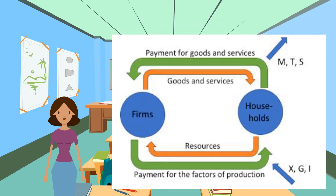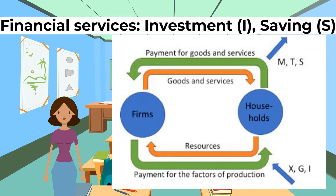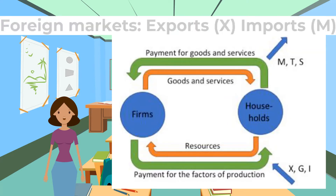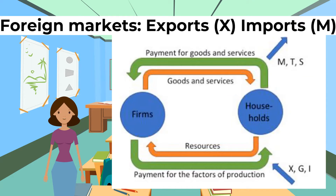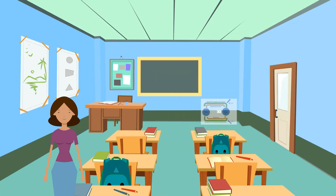Government adds money by spending, shown by G. If the government spends more than it takes away, it can increase the flow of income. Next, financial services are added — they can inject money into the system through investment, shown by I, and take money away when consumers or producers save, shown by S. Finally, foreign markets are added: exports, shown by X, add money to the flow, while imports, shown by M, take money away. The difference between imports and exports is the balance of trade.